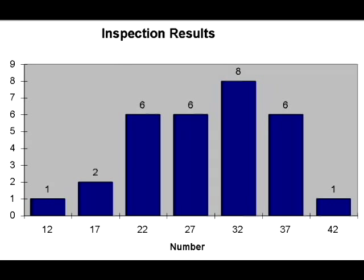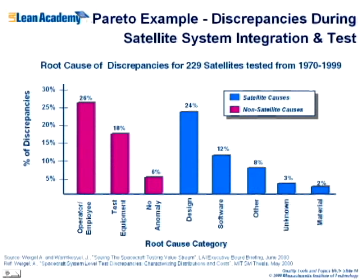This is a histogram — a way of displaying data. Lean is a data-driven exercise; we always collect data, no more opinions. A Pareto chart looks like a histogram, except it plots the biggest item first, then the next biggest, down to the bottom. We want to find the kinds of errors and work on the biggest ones first because we don't have unlimited resources.